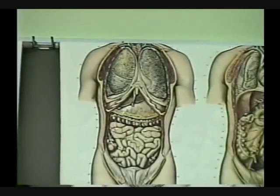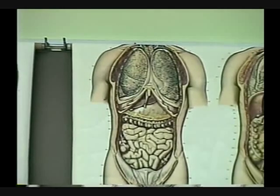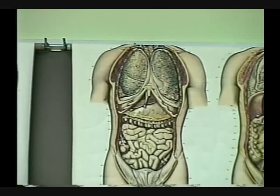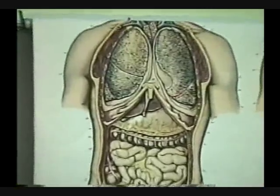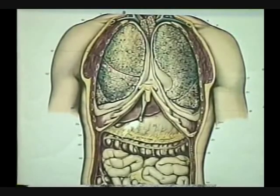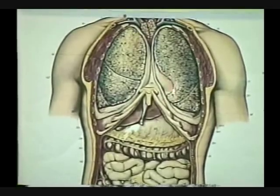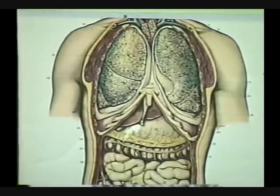We see these three parts — superior, middle, inferior. The right has three. On the left we have superior and inferior. This line here is the oblique fissure and this one is the horizontal fissure. What's this indentation here called? That was the cardiac notch — that's where the tip of the heart sticks in.